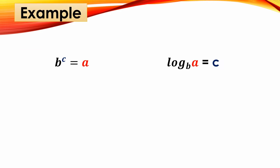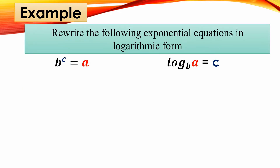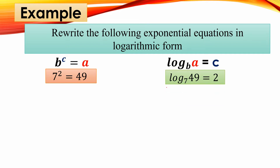Let us have an example. We write the following exponential equations in logarithmic form — transforming from exponential to logarithmic. Our first given is 7 raised to 2 equals 49. When we transform this, we just add the logarithm: log base 7 of 49 equals 2, where 7 is your base, 49 is the equivalent value, and your exponent is 2. Another example: 27 raised to 1/3 equals 3, so this becomes log base 27 of 3 equals 1/3.